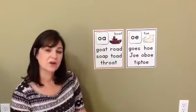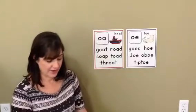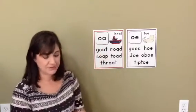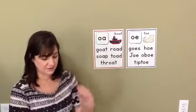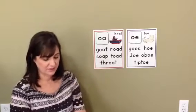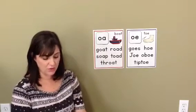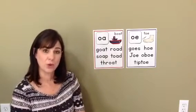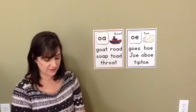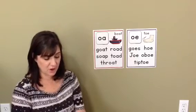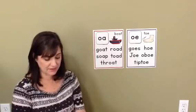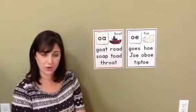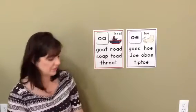Let's first talk about OA. The diphthong OA makes one sound. It says O, like in the word goat and boat. The diphthong OA says O in the middle of a word or a syllable.